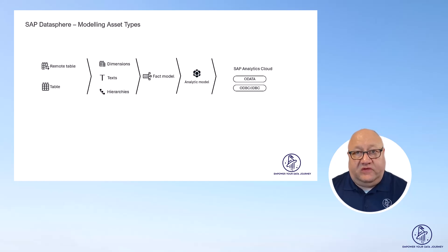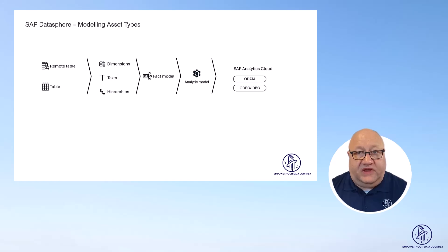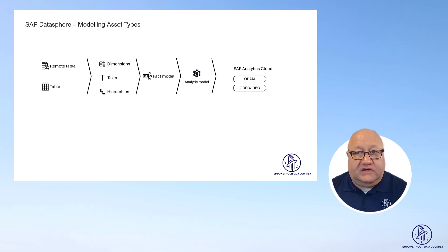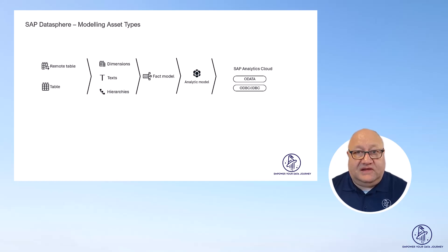So now putting everything together. At the base level, we have the local table and the remote table. Based on those, we can then create dimensions, text views for items like product names and our hierarchies. The next step is the fact model, where we're combining our transactional data with the views from the previous step. And finally, the analytical model, which is then exposed to SAP Analytics Cloud.